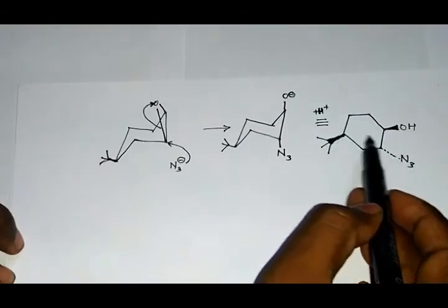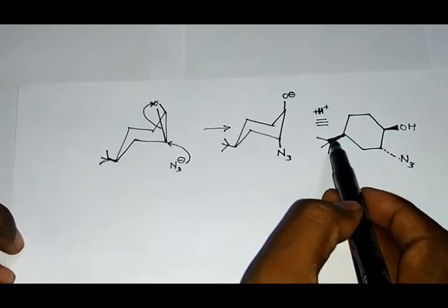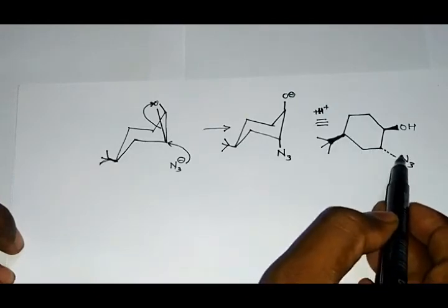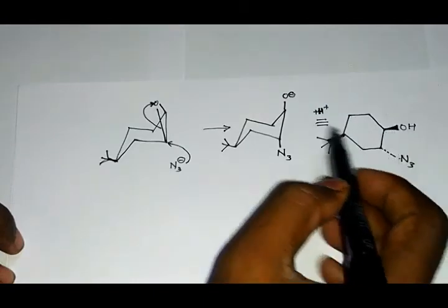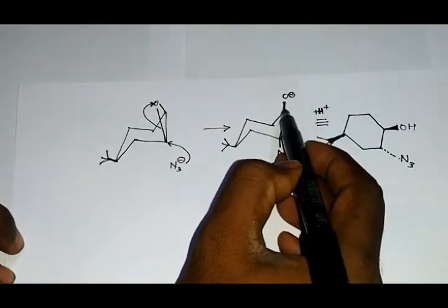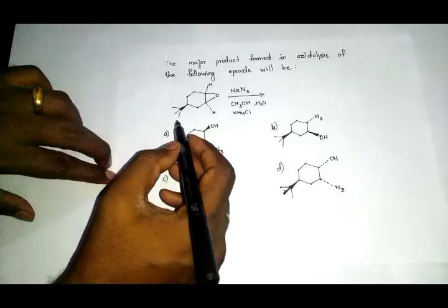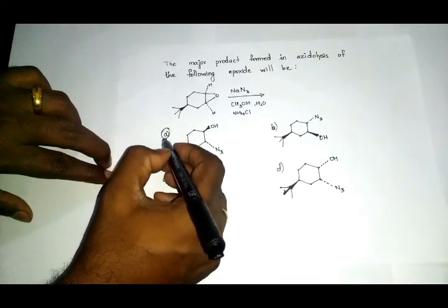So this is above the plane of the paper, this is below the plane of the paper. The OH group, since it was at the axial position, comes above the plane of the paper. So option A is the right choice.